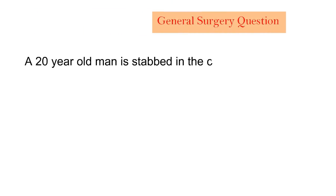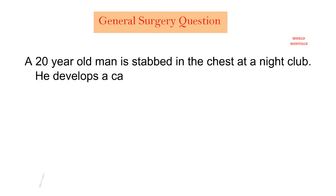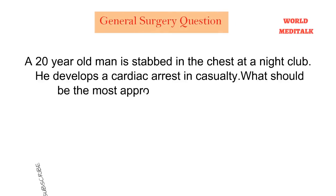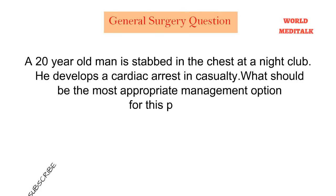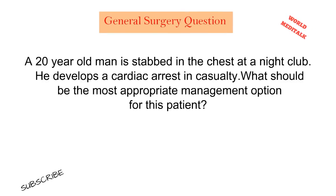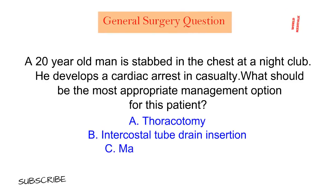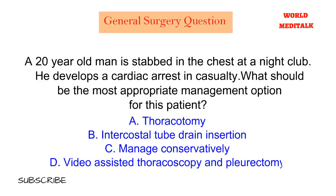A 20-year-old man is stabbed in the chest at a nightclub. He develops a cardiac arrest in casualty. What should be the most appropriate management option for this patient? The options are thoracotomy, intercostal tube drain insertion, manage conservatively, video-assisted thoracoscopy, and pleurectomy.